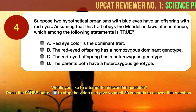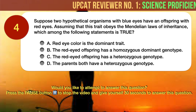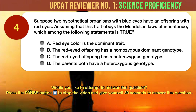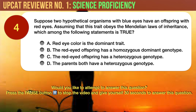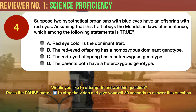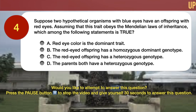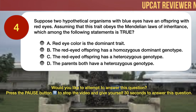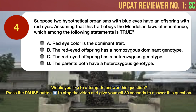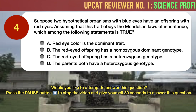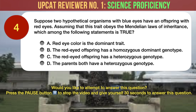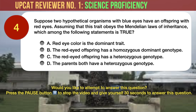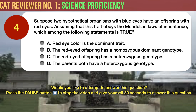Question number 4. Suppose two hypothetical organisms with blue eyes have an offspring with red eyes. Assuming that this trait obeys the Mendelian laws of inheritance, which among the following statements is true? A. Red eye color is the dominant trait. B. The red-eyed offspring has a homozygous dominant genotype. C. The red-eyed offspring has a heterozygous genotype. D. The parents both have a heterozygous genotype.